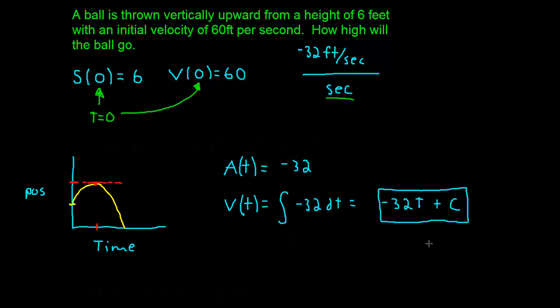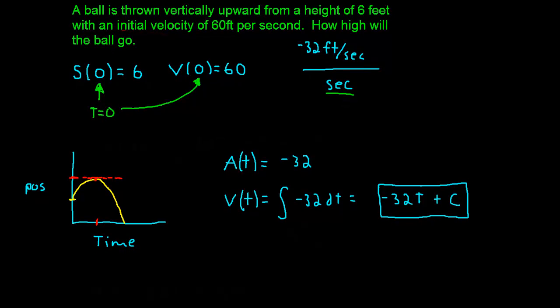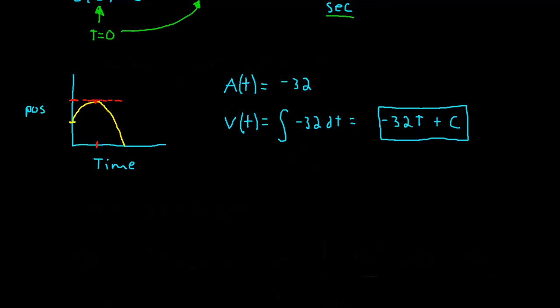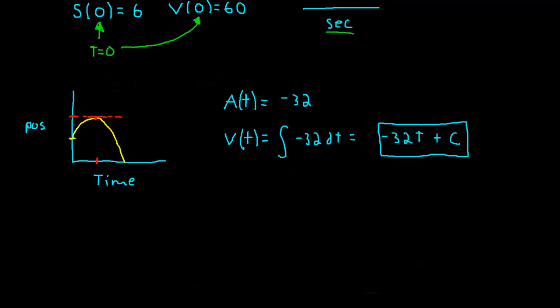Okay, in order to get a specific solution, we need to have an initial condition. And it just so happens that we have an initial condition. Our initial condition that V(0) is equal to 60 is going to help us find this value of C.